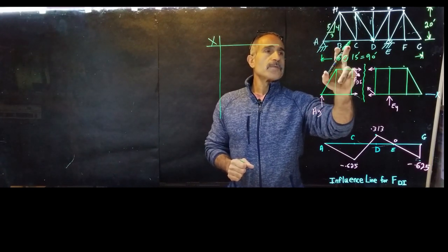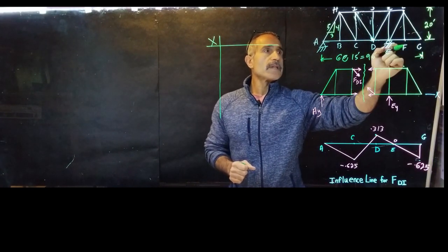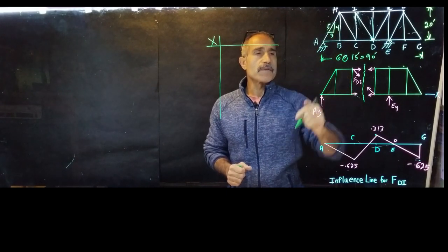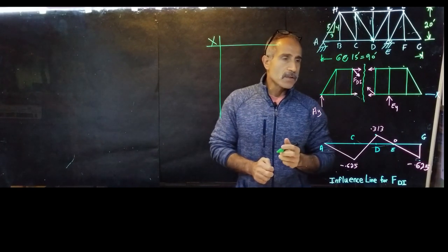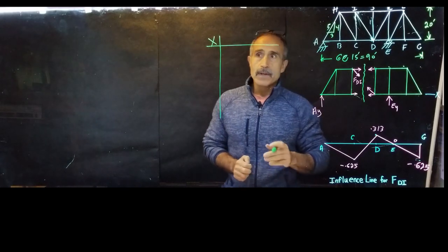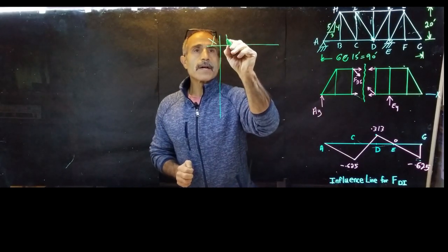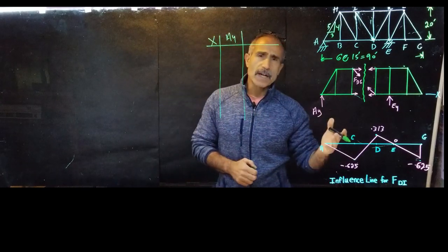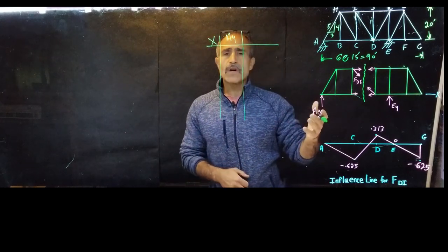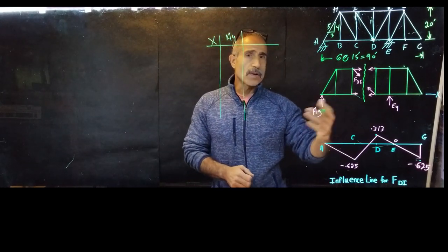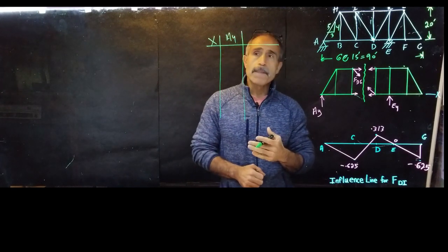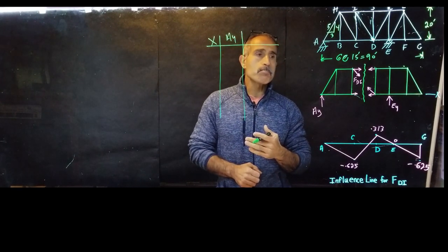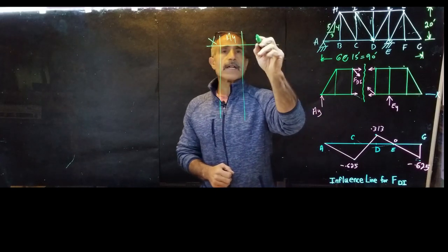The truss is about 15 feet each bay and 20 feet tall, so the slope comes out to a 3-4-5 ratio, making everything easy to calculate. I'm going to make a column for Ay as well, in case you're asked to draw an influence line for Ay — you'll already have the numbers for it. Remember, FDI itself is what we're solving for.